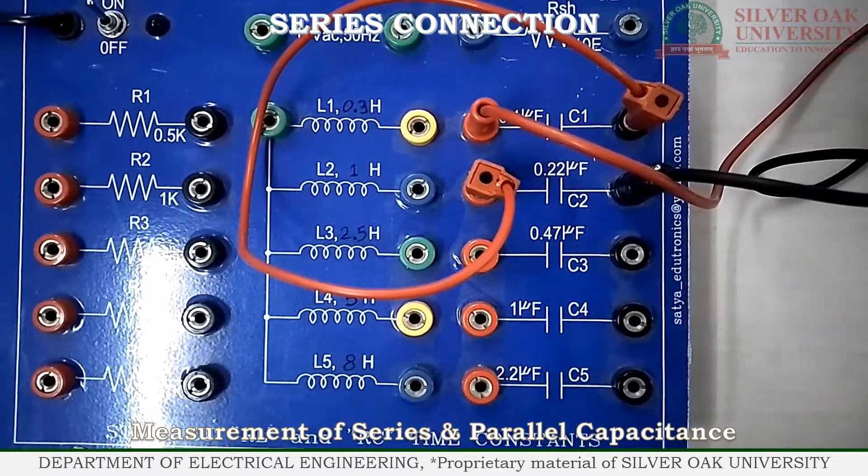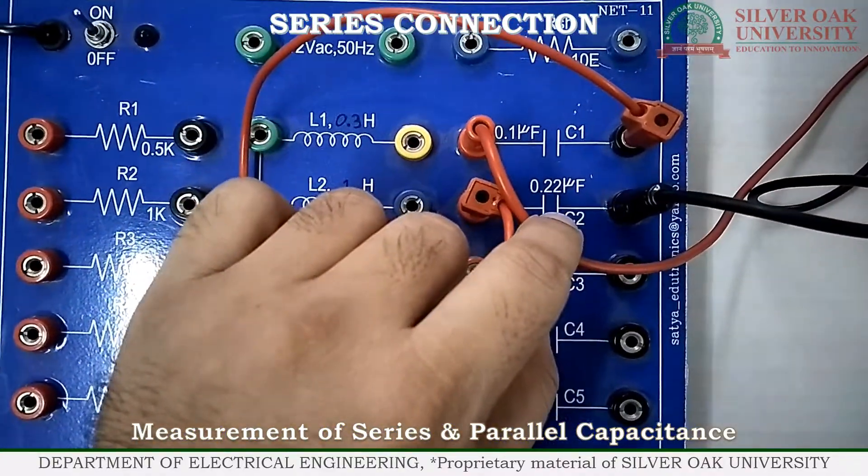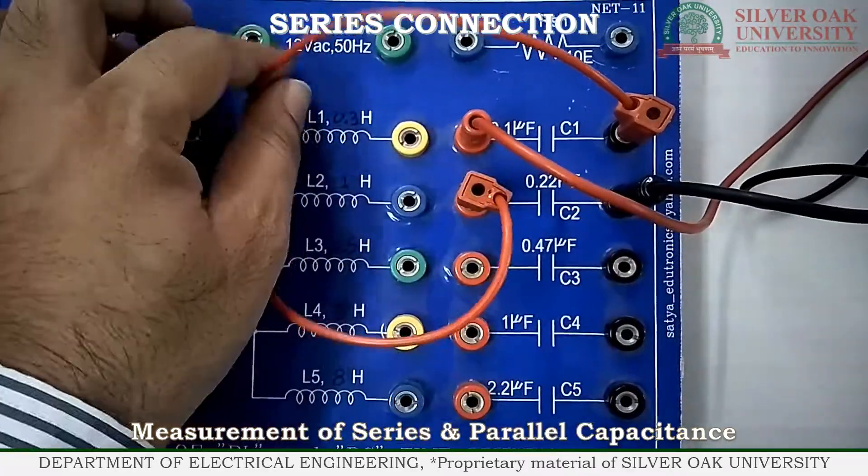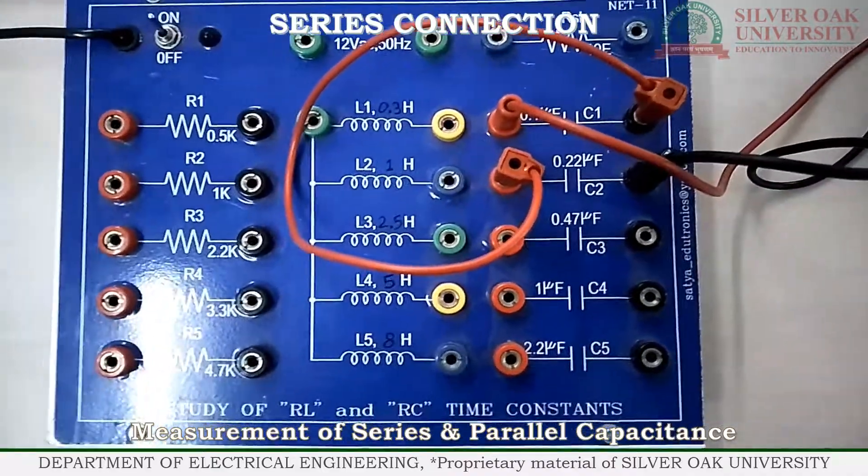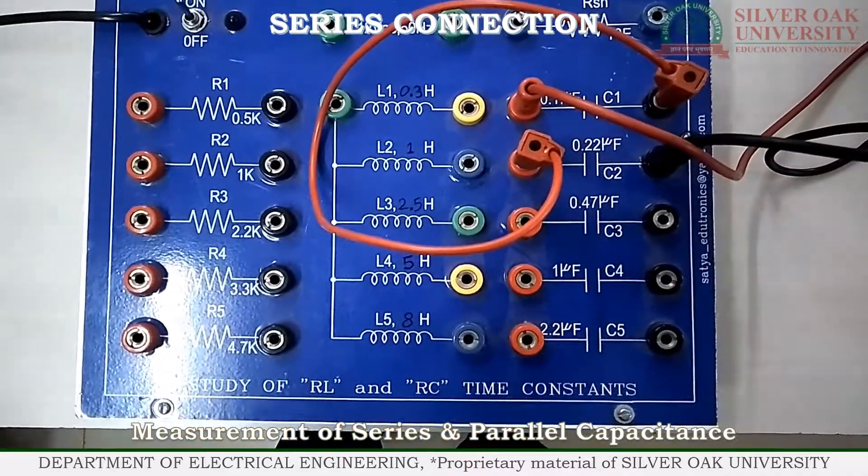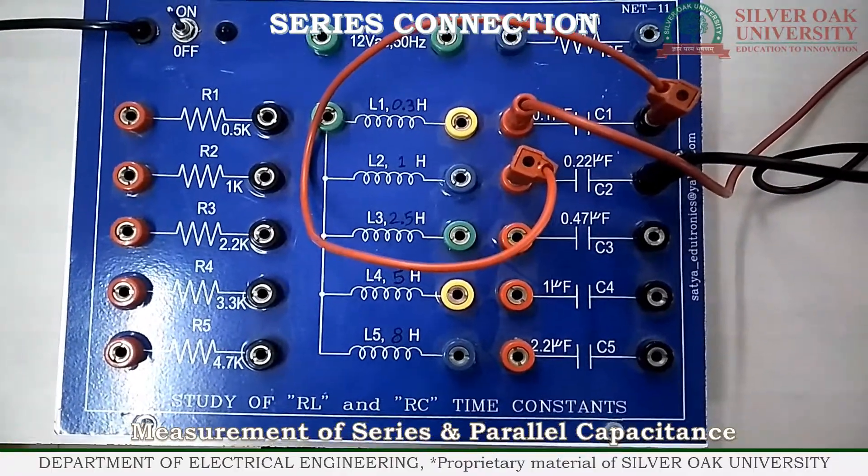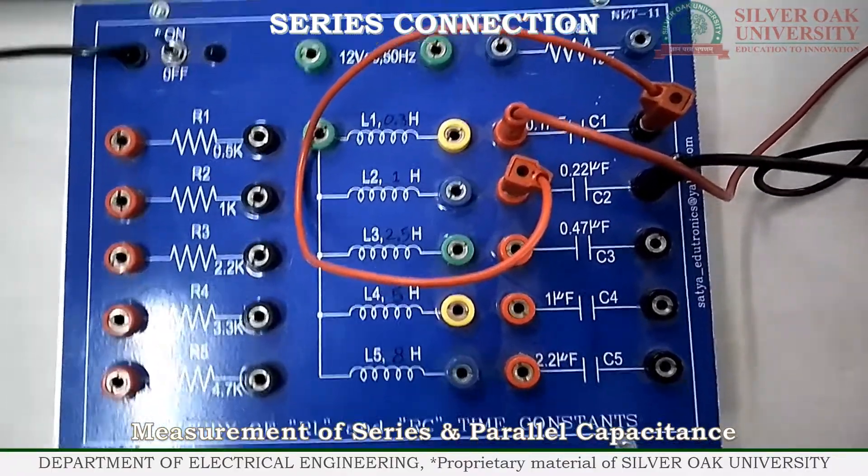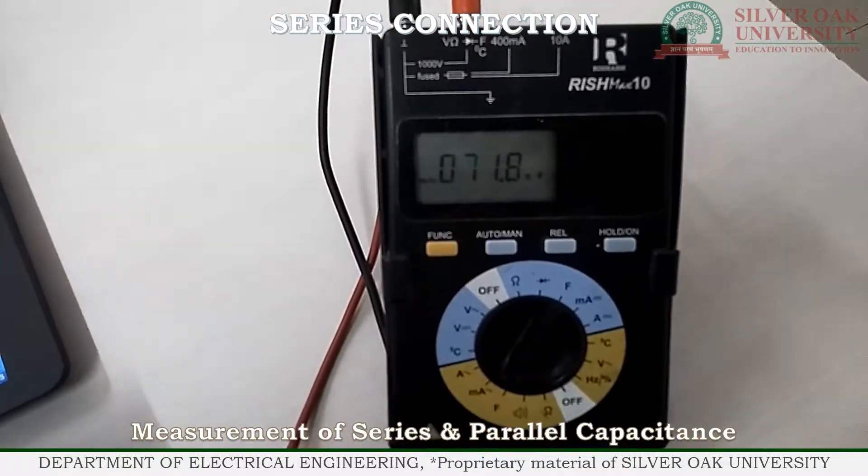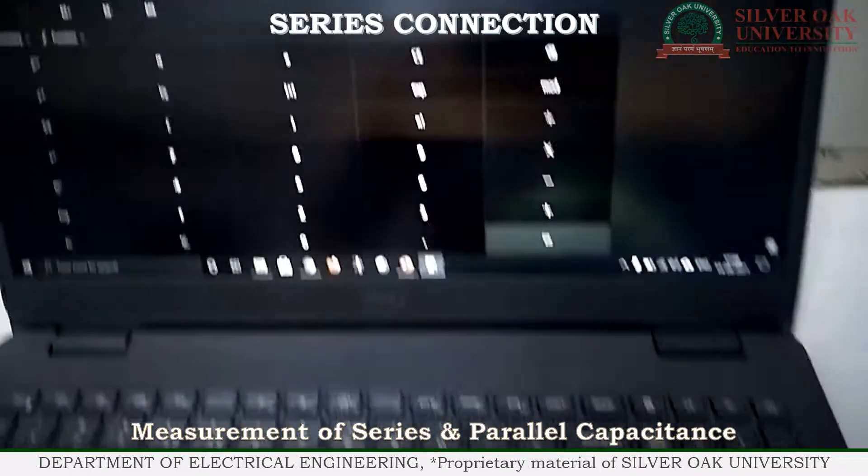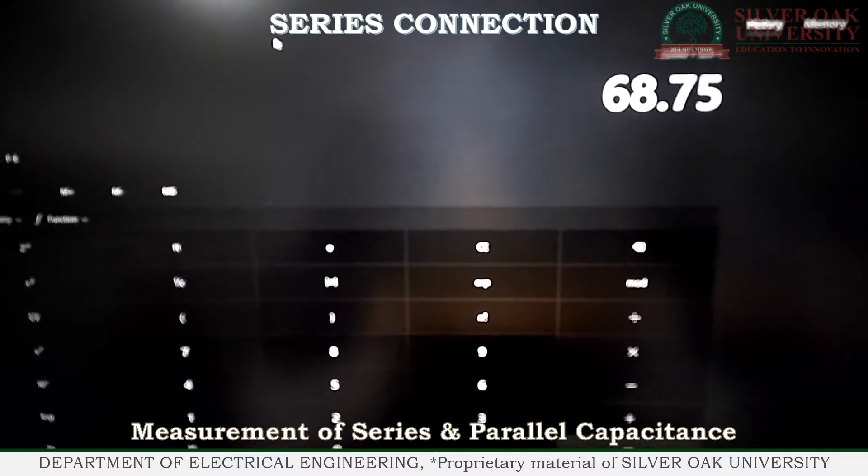As you can see here we have connected capacitor 0.1 microfarad and 0.22 microfarad in series using this wire. Now, in capacitor, when you connect two capacitors in series, they use the equation C1 into C2 divided by C1 plus C2 to measure their parallel capacitance. So, it will be 71.8 nanofarad and by calculation you will get 68.75 nanofarad. The calculation is shown in the slide.